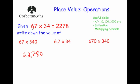Next, instead of 67 times 34, we've now got 6.7 times 34. So one of our numbers has become 10 times smaller, which means our answer will become 10 times smaller. So instead of 2278, we're going to have 227.8. If one of the numbers in the calculation is 10 times smaller, the answer will become 10 times smaller.